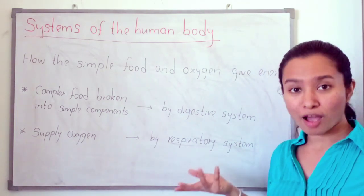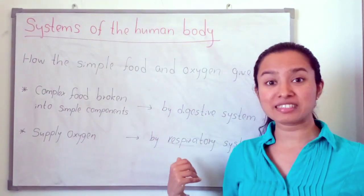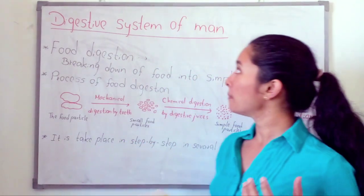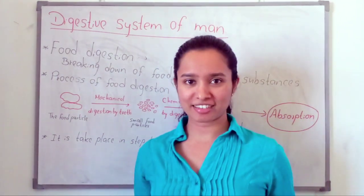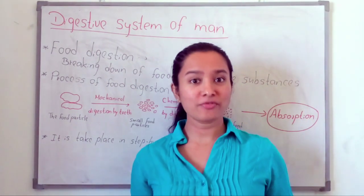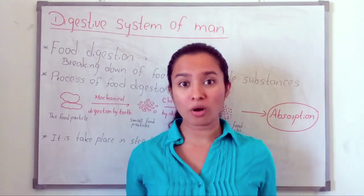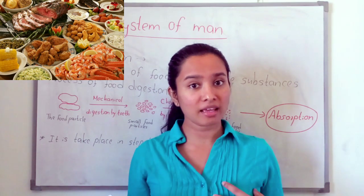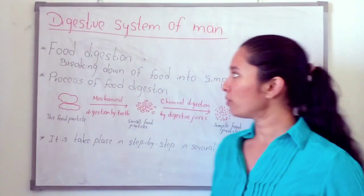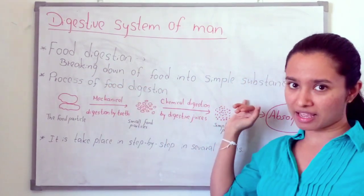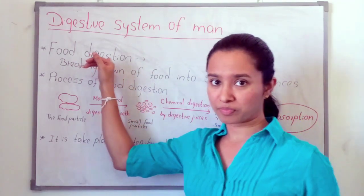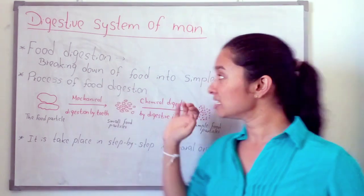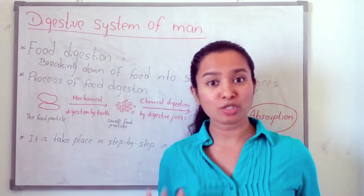Oxygen is supplied by the respiratory system. So, we are going to discuss about these two systems: the digestive system and the respiratory system. In day-to-day life, we take food, and these foods are complex and large particles. These large particles cannot be absorbed by our body. So, the breaking down of food into simple substances is called food digestion. These simple substances can then be easily absorbed into our body.